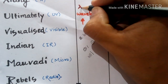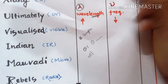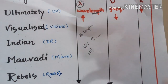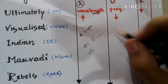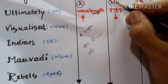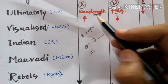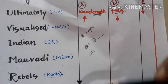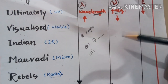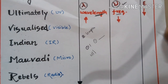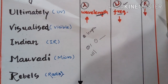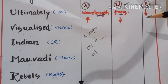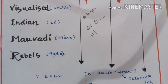So the order in increasing wavelength is: Cause Gandhi Jiang Ultimately Visualize Indian Mawadi Rebels. Since wavelength and frequency are inversely proportional, as wavelength increases, frequency decreases. And since energy is directly proportional to frequency, in this same direction the frequency and energy are both decreasing.